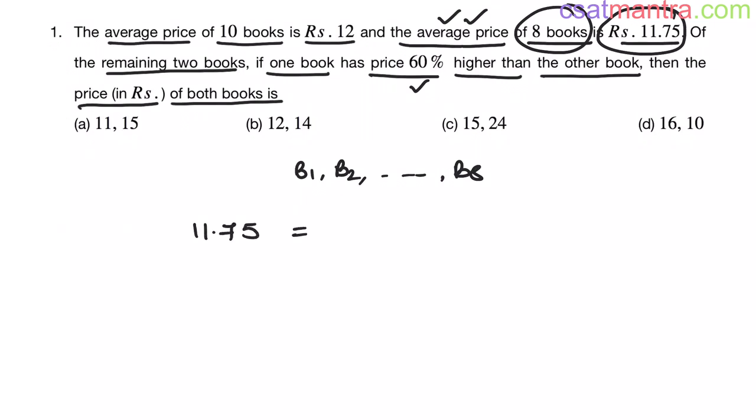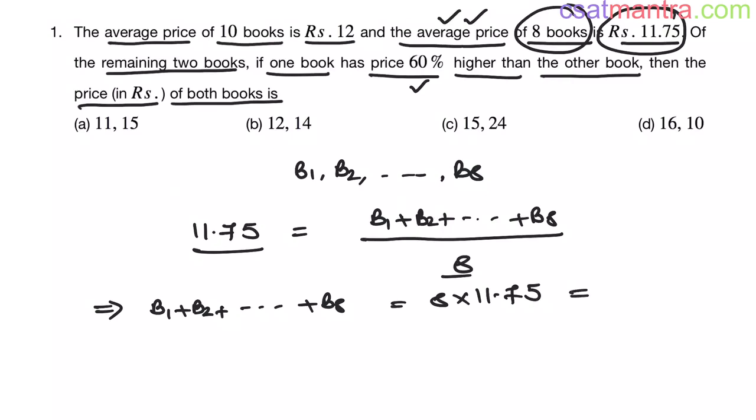So their average price is Rs. 11.75. This equals total sum, total price that is B1 plus B2 up to B8 by total number of books, 8. This implies B1 plus B2 up to B8 equals 8 into 11.75. Cross multiplication. 8 times 11 is 88, so 88 plus 6 equals 94.